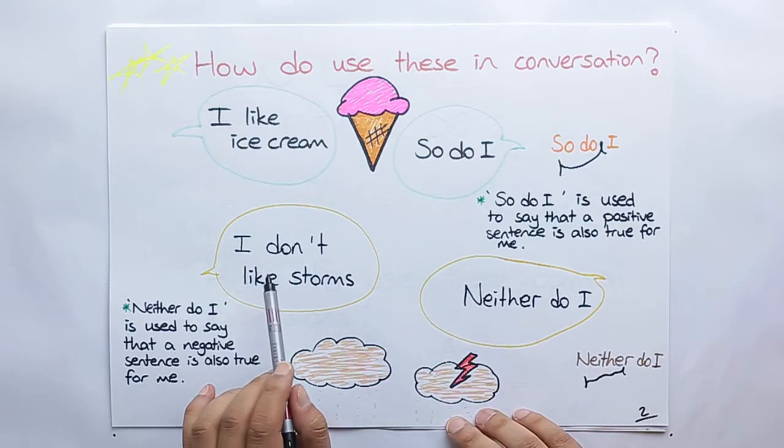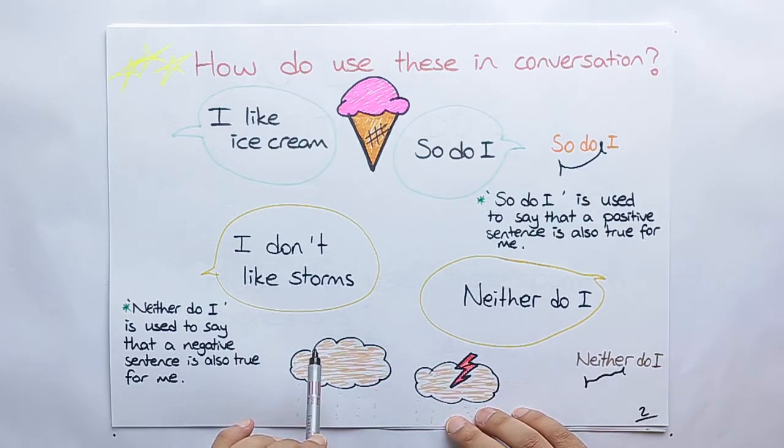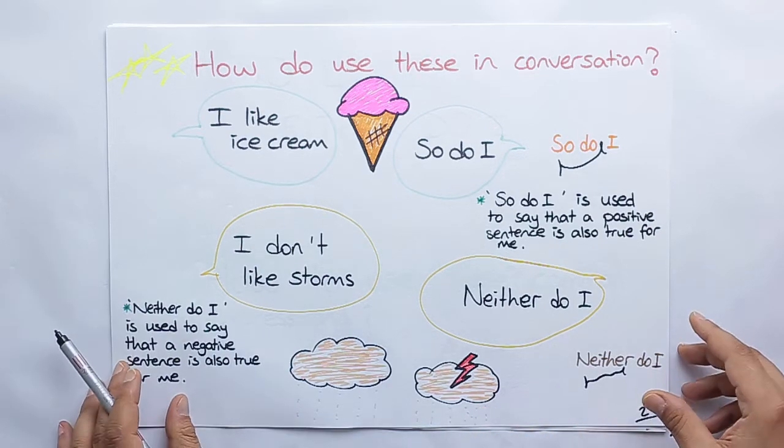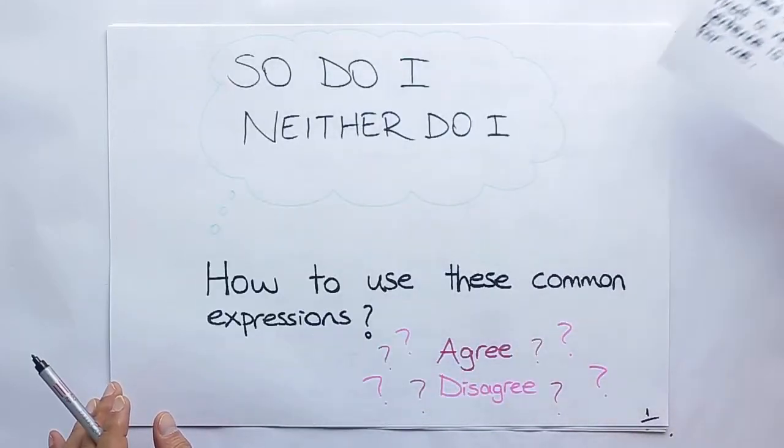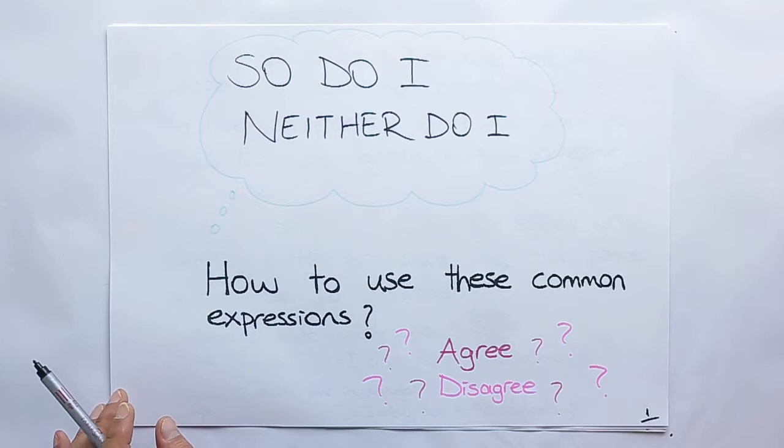Or, I don't like storms, neither do I is used to say that a negative sentence is also true for me. Yes. So do I or neither do I. How to use these common expressions? Agree or disagree?